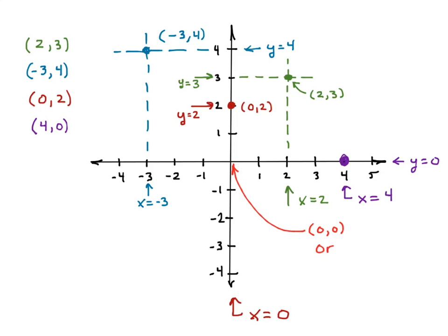The origin, of course, has the coordinates of (0,0), and that's generally the center of our graph. It doesn't necessarily have to be, but it's always considered the origin where we have (0,0).